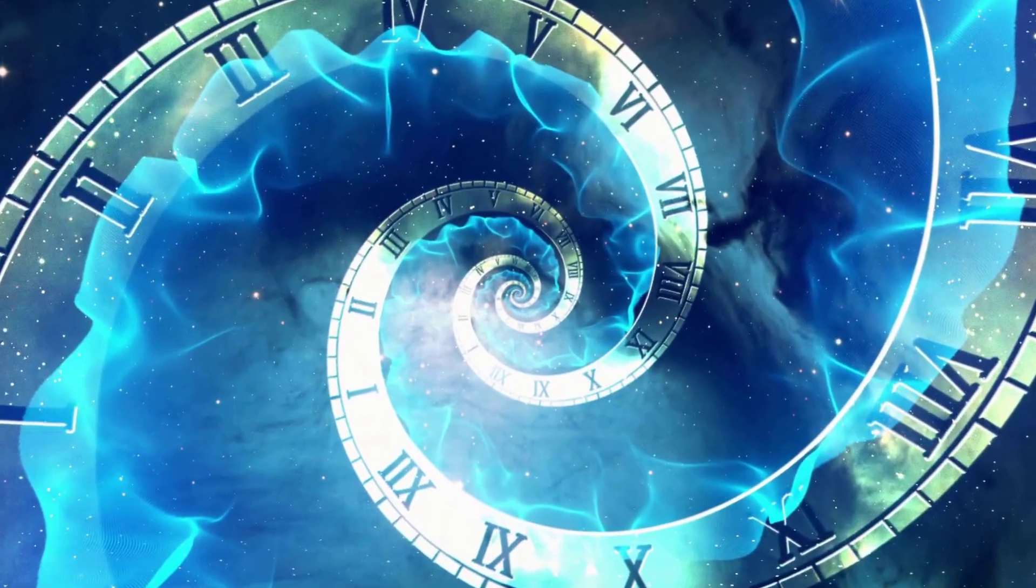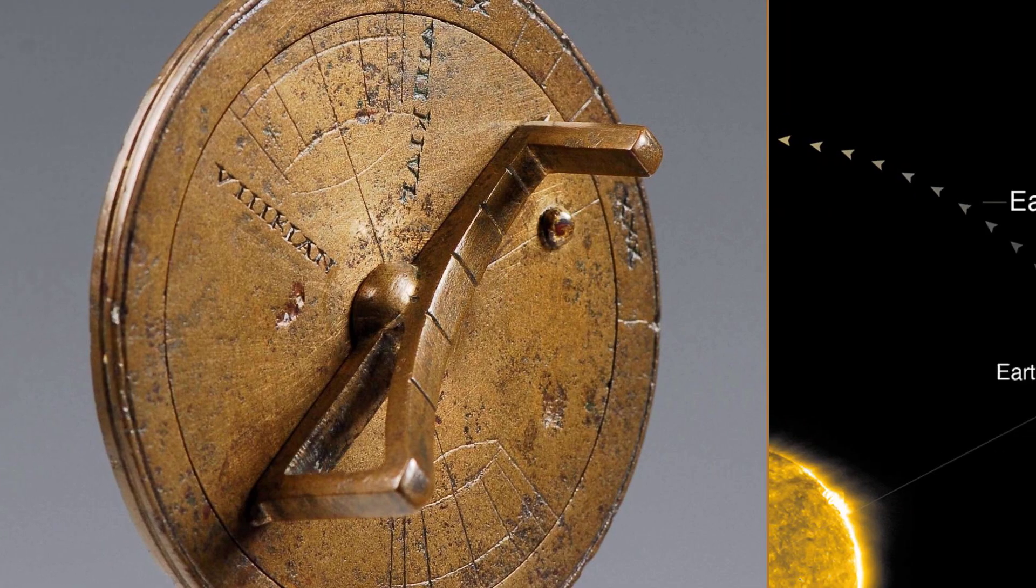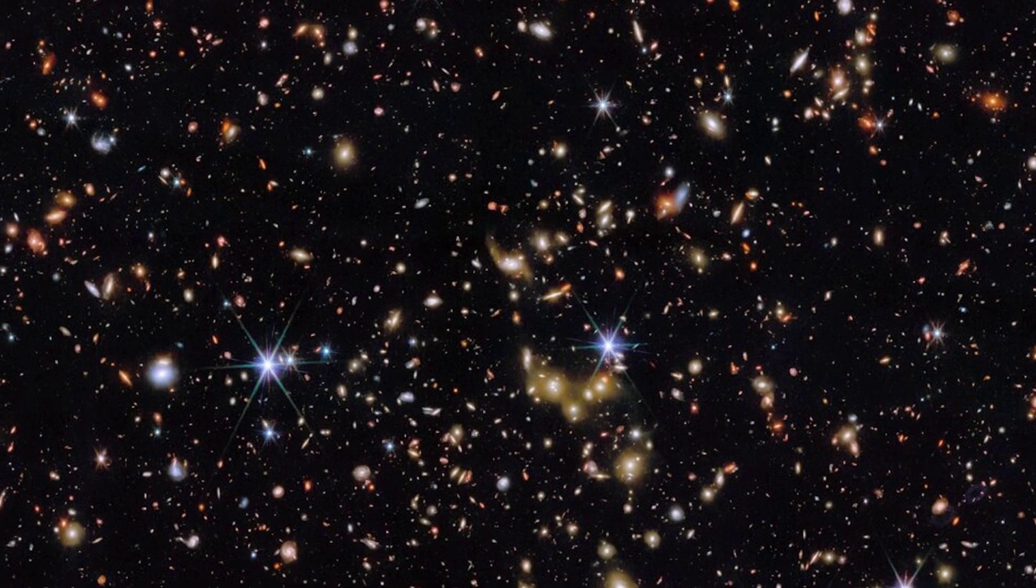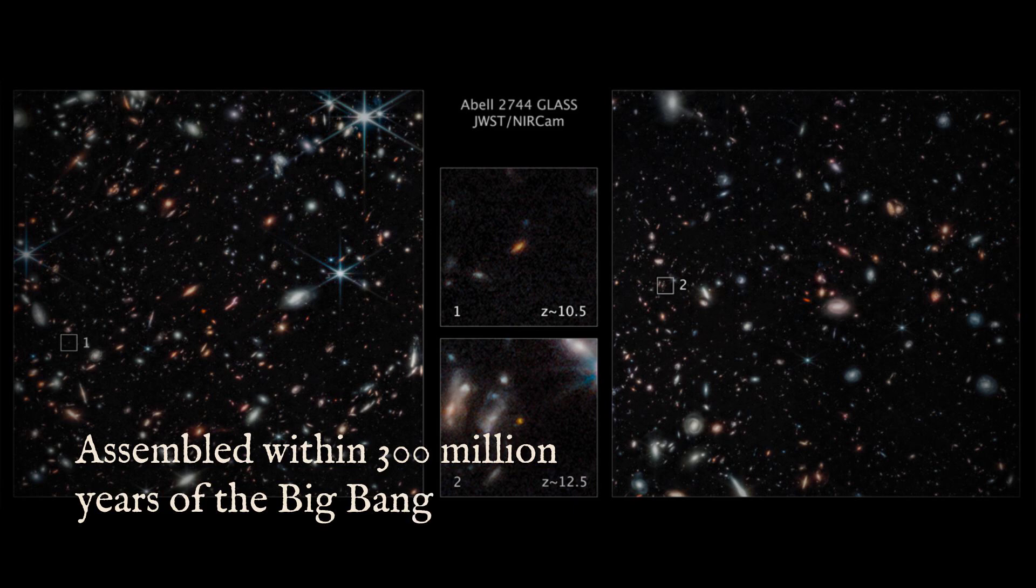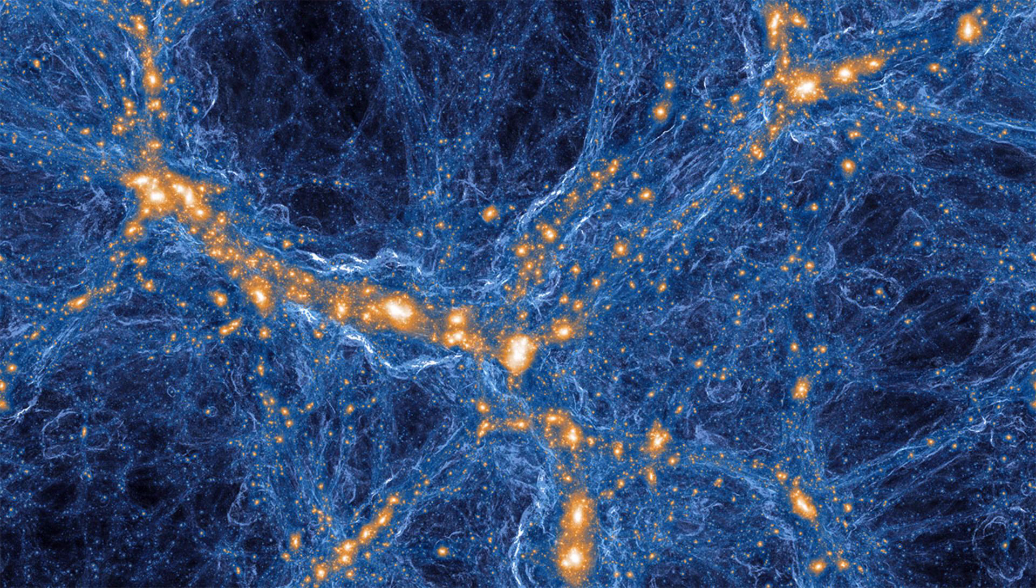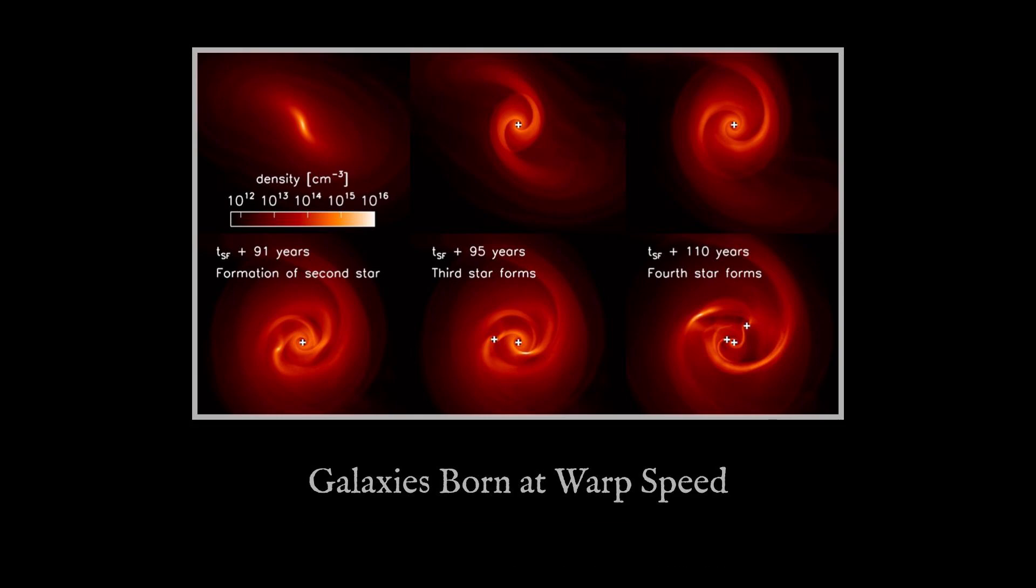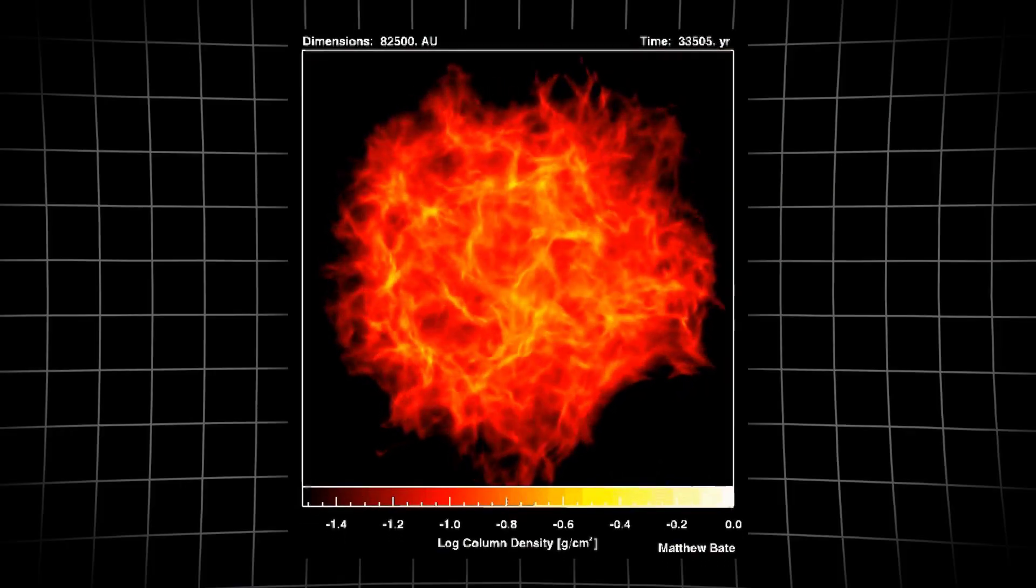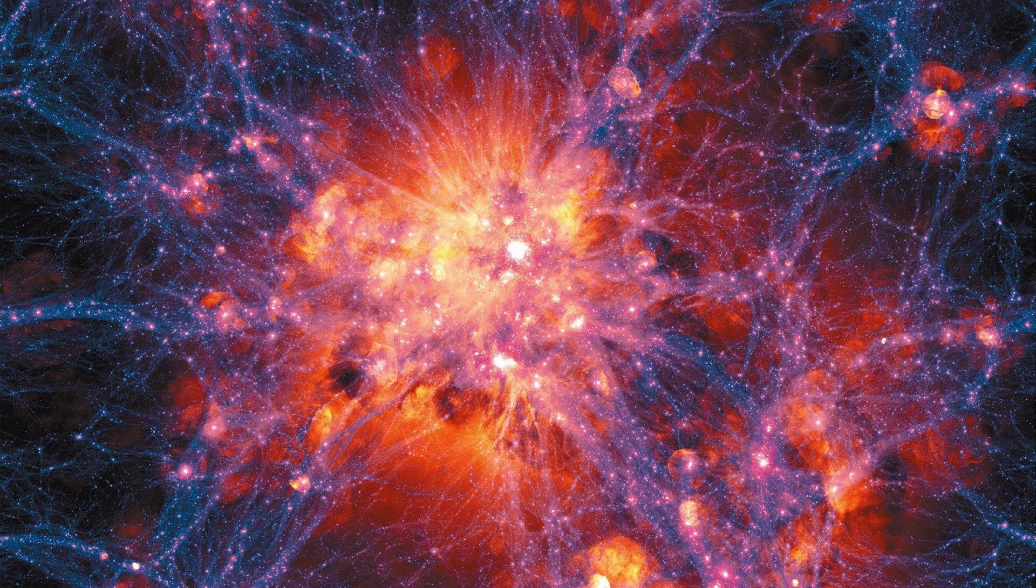Picture the universe as a cosmic clock, its hands sweeping across billions of years. Now imagine someone just smashed the glass and moved the hands forward fast. That's what these galaxies are doing to our timeline. If galaxies like JADES-GS-z13-0 and the red monsters really did assemble in just a few hundred million years, the entire story of how structure forms in the cosmos might need rewriting. Maybe the universe built stars and galaxies with turbocharged efficiency, burning through its gas supply at record speed. Or maybe there's something deeper, a flaw in how we think gravity and dark matter shaped everything.